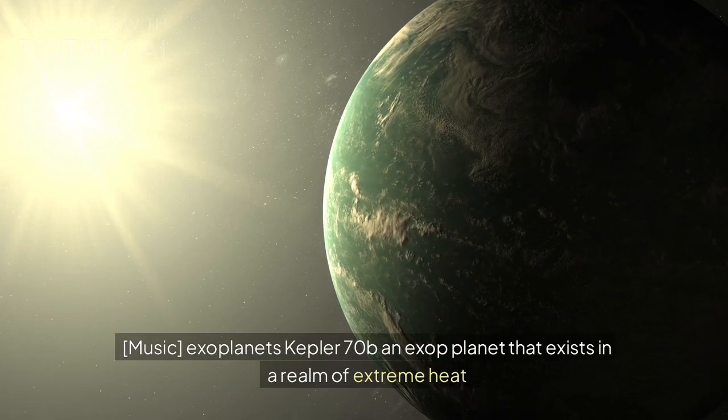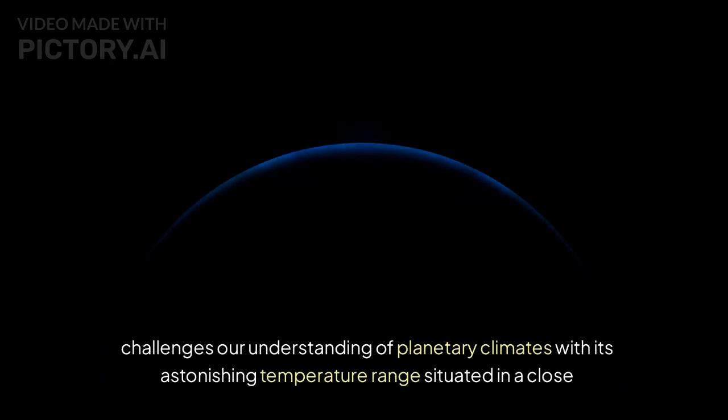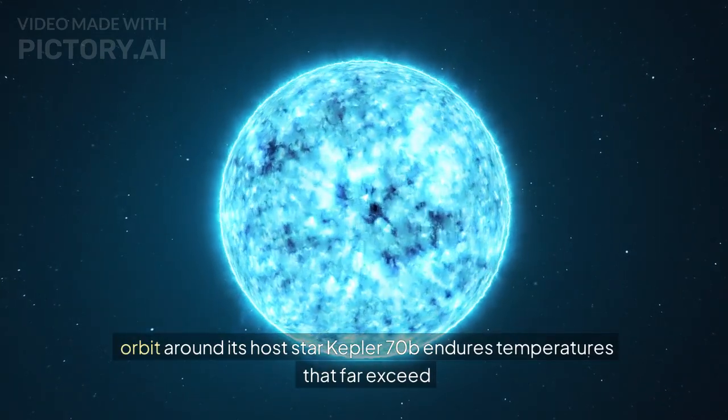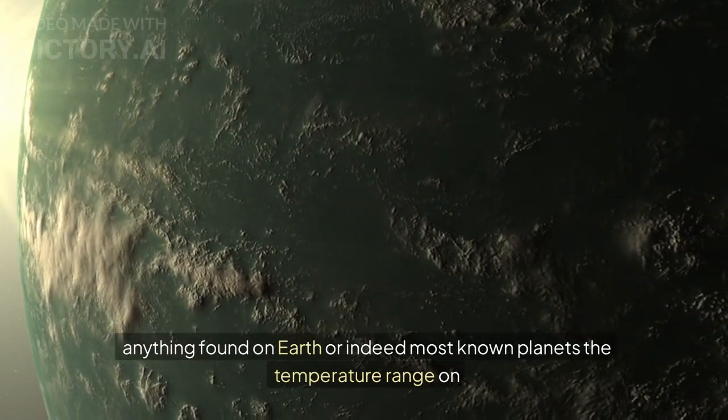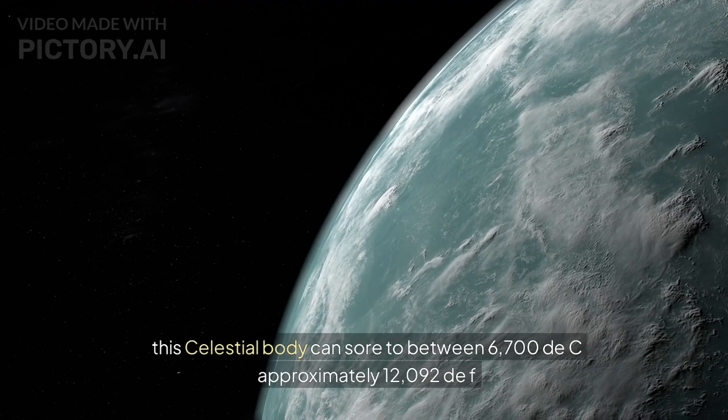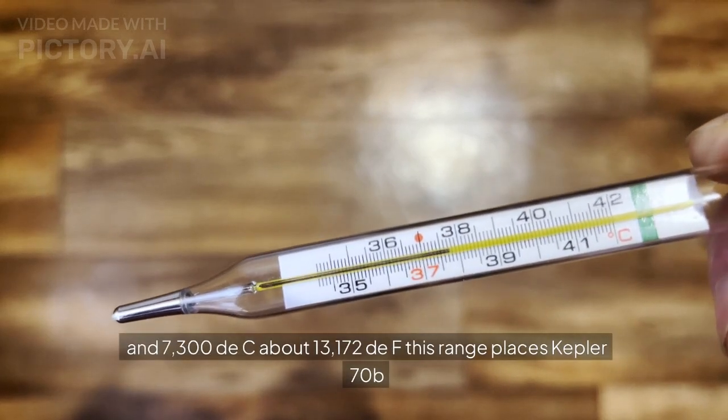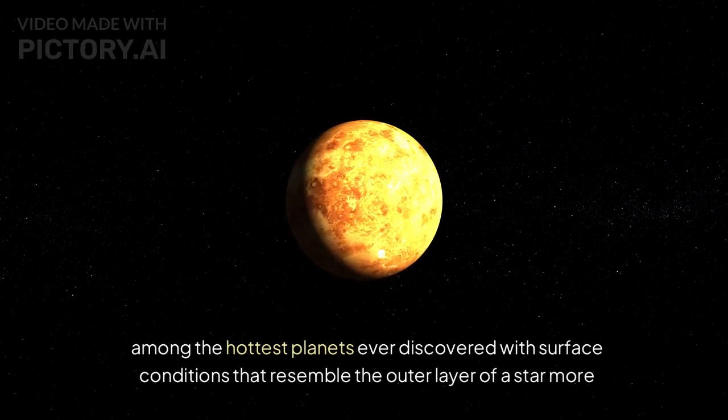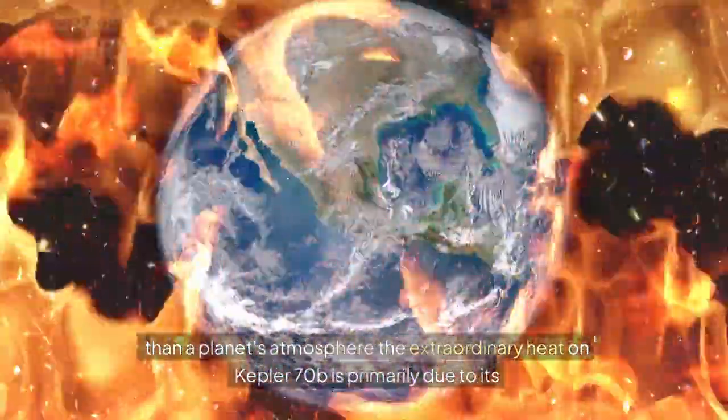Kepler-70b, an exoplanet that exists in a realm of extreme heat, challenges our understanding of planetary climates with its astonishing temperature range. Situated in a close orbit around its host star, Kepler-70b endures temperatures that far exceed anything found on Earth. The temperature range on this celestial body can soar to between 6,700°C, approximately 12,092°F, and 7,300°C, about 13,172°F. This range places Kepler-70b among the hottest planets ever discovered, with surface conditions that resemble the outer layer of a star more than a planet's atmosphere.